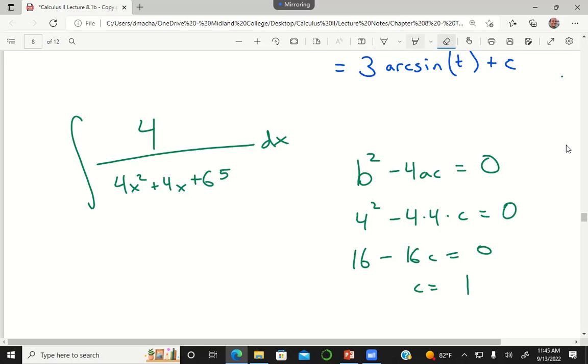Now I have plus c to the 5, but I want it to be plus one. Let me rewrite this now as 4 over... I can just move the 4 outside. One over 4x squared plus 4x plus 1 plus 64 dx.